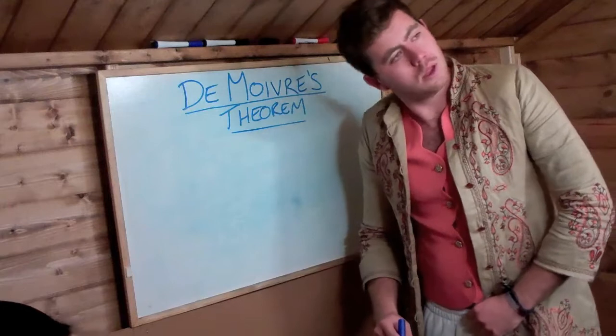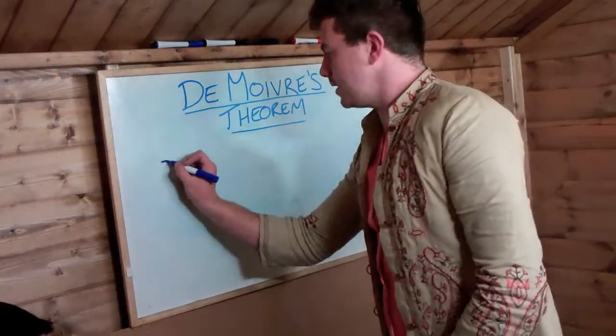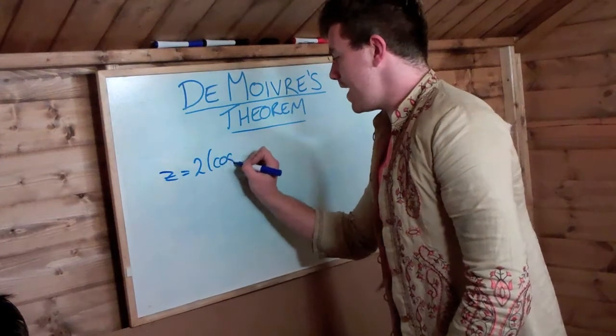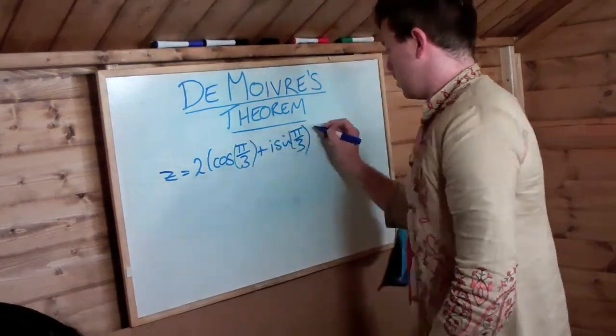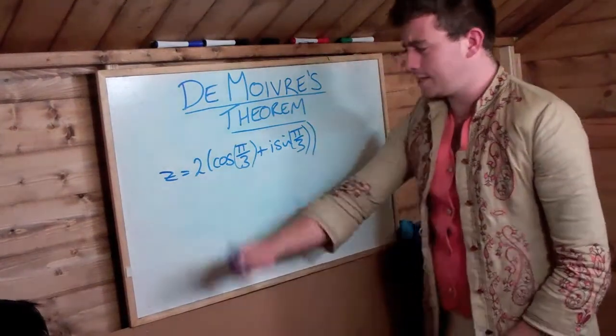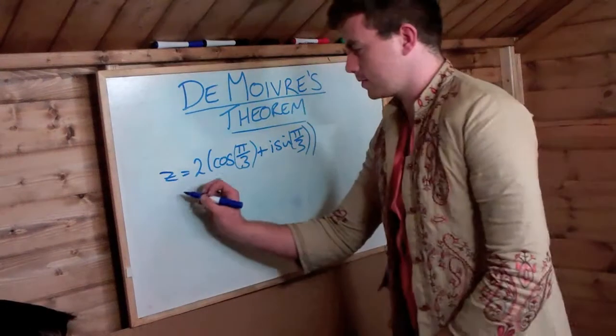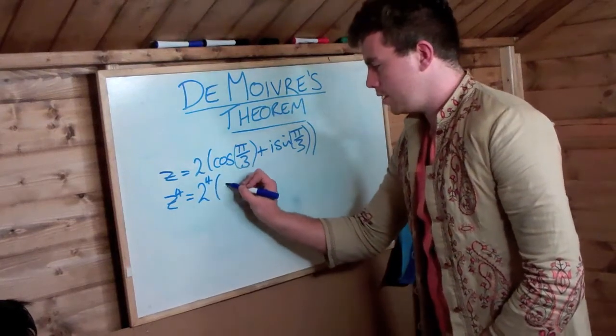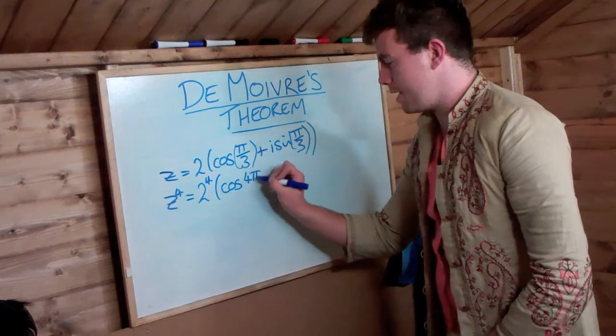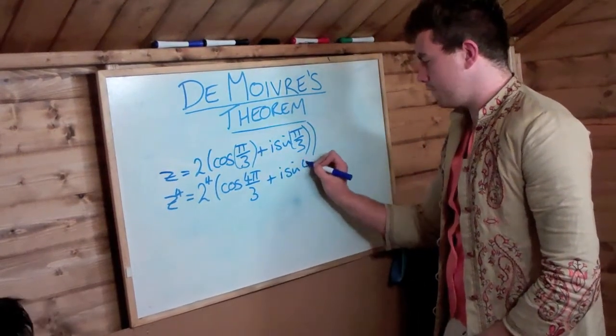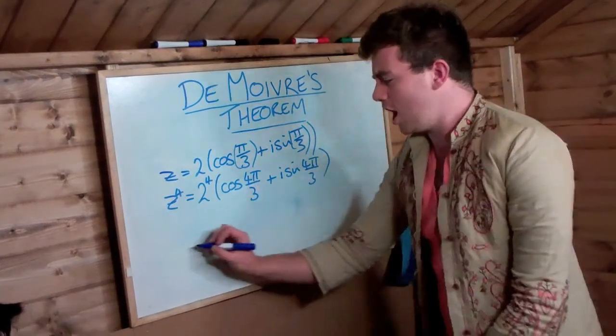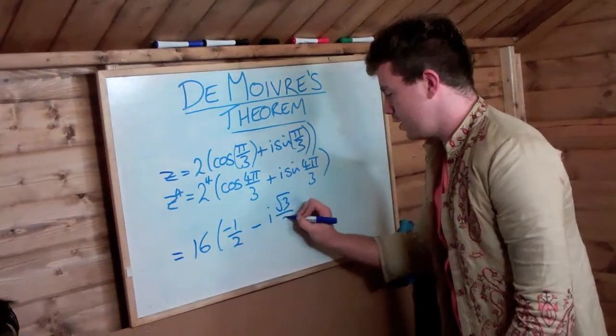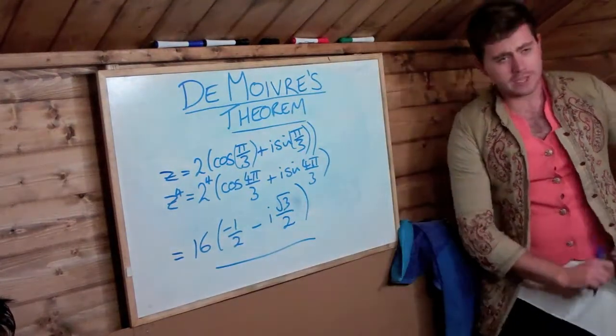Let me show you an example. Now, let's say z, where r is 2 and theta is pi by 3. Now, using de Moivre's theorem, we are going to take z to the power of 4. And to do this, we can simply write z to the power of 4, 2 to the power of 4, cos 4 pi by 3 plus i sine 4 pi by 3. Which is obviously equal to 16 minus 1 half minus i root 3 over 2. And that, my friends, is de Moivre's theorem.